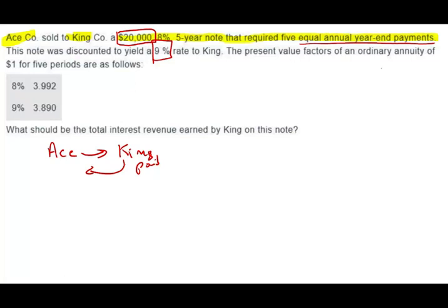The present value factors of an ordinary annuity of one payment for five periods are as follows: 8% is 3.992, 9% is 3.890. What should be the total interest revenue earned by King? So they're asking us for the interest revenue. Now, the first question is this: what is King purchasing? When you buy the note, what are you really buying?